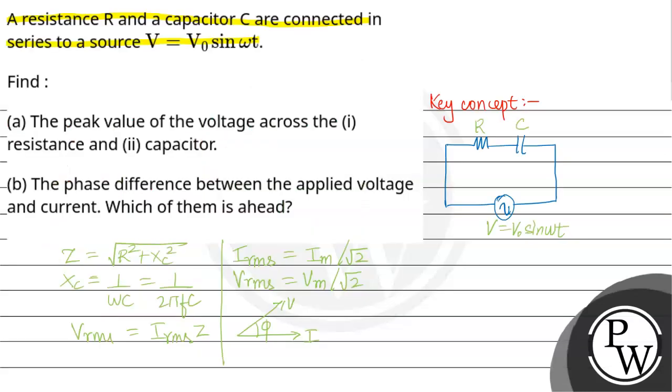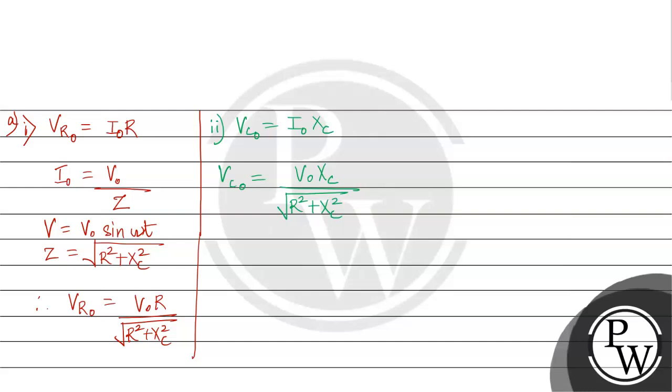Last is option B, part B. The phase difference between the applied voltage and the current, and which of them is ahead. When you draw the phasor diagram for RC circuit, taking current as reference, VR is in phase and voltage lags in capacitor circuit.